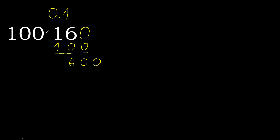600. 100 multiplied by 6 is 600 — 600 is not greater. Subtract: 600 minus 600 is 0. Therefore finish.